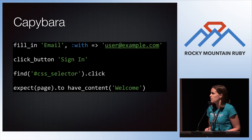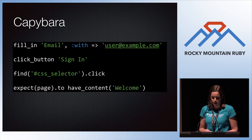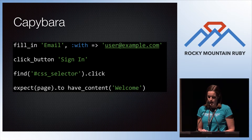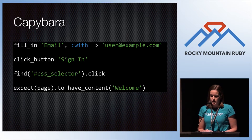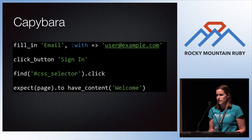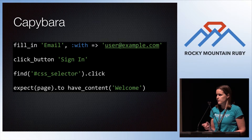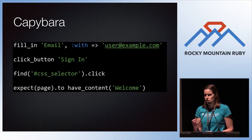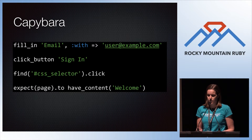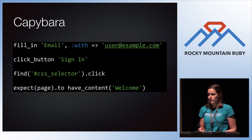A quick intro to what Capybara is: it's a DSL for testing web applications that simulates how a real user would interact with your application. It has methods like fill_in and click_button. One of the common methods you'll see is find, where you pass in a CSS selector and it will return a Capybara element, which you can then do things to, like click, get the text, or the value of it.